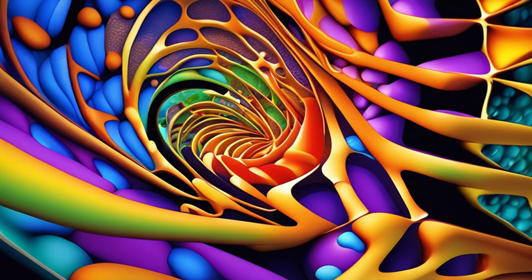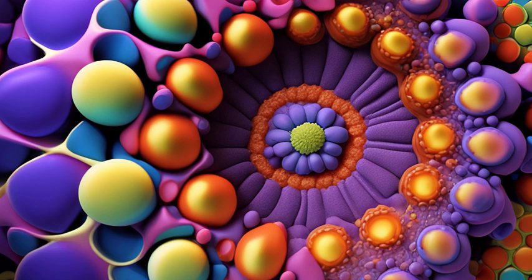The outer layer of a cell is called the cell membrane. It acts as a gatekeeper, controlling what goes in and out of the cell.